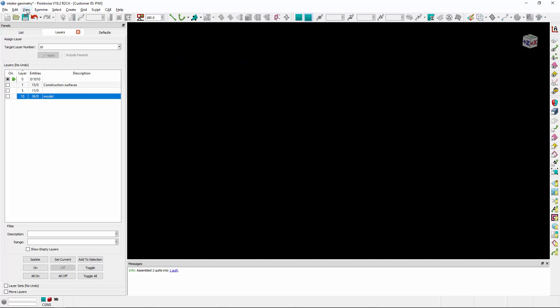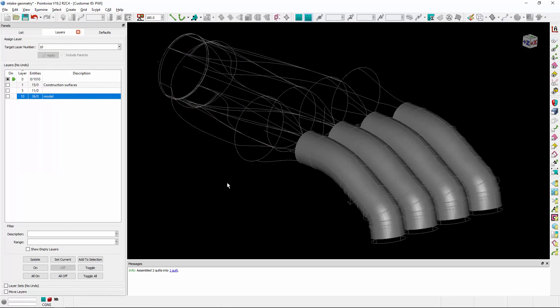If we go ahead and turn off the model and go to view show hidden, we can now see the underlying support geometry for this particular model. Again, we hide these by default so that you're working on the quilt and model level in PointWise.